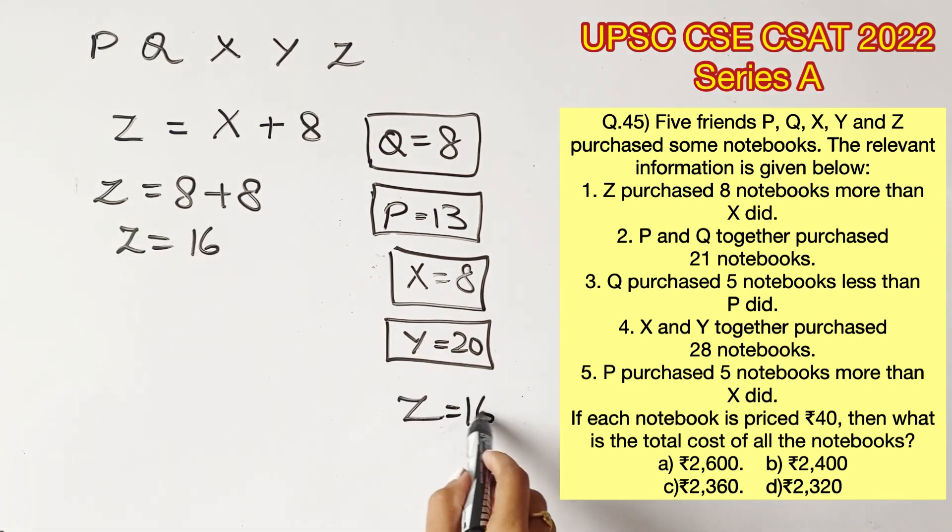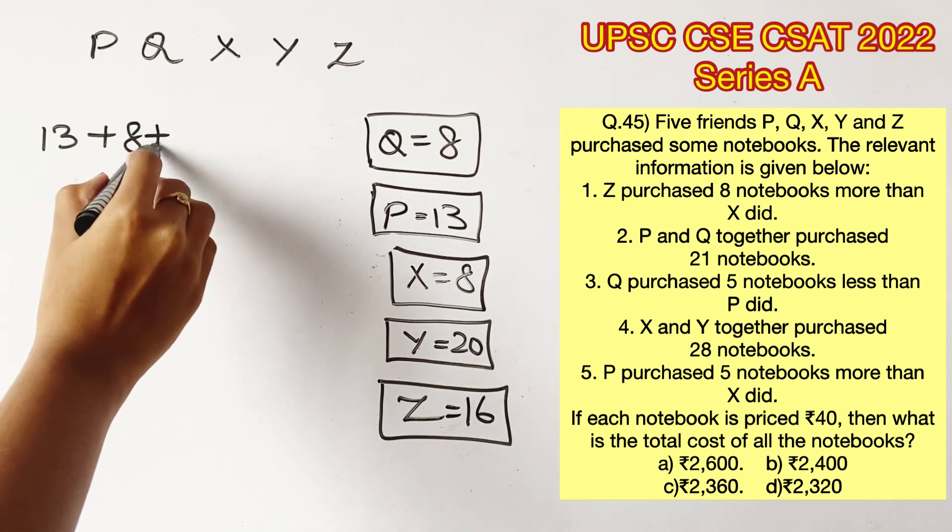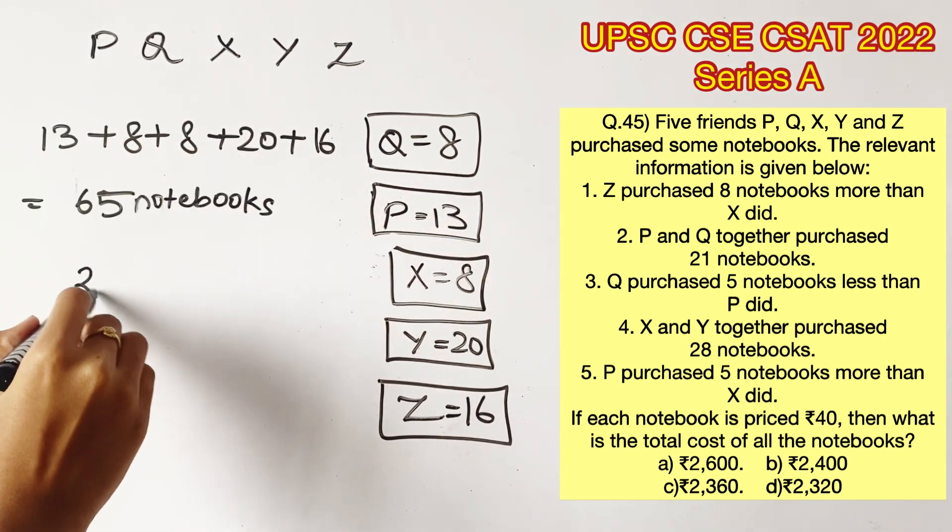Now that we got all the values, we'll have to add all of these to know the total number of notebooks bought. So it will be 13 plus 8 plus 8 plus 20 plus 16. This gives a total of 65 notebooks.